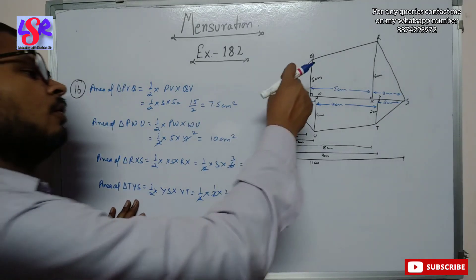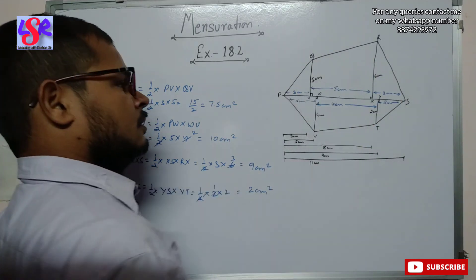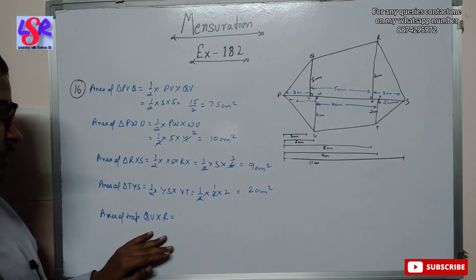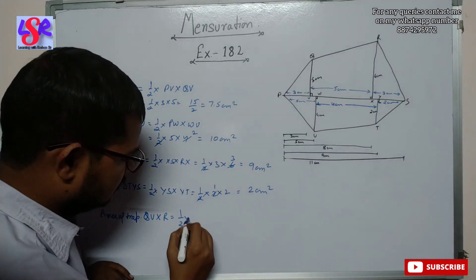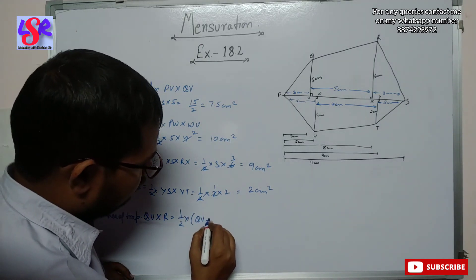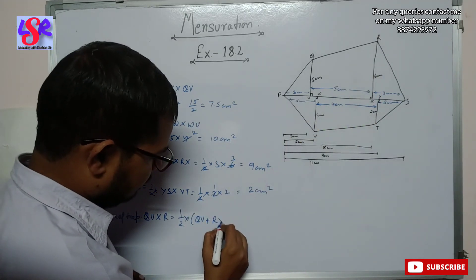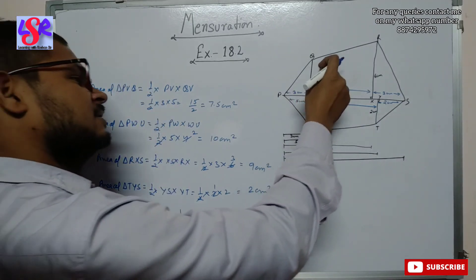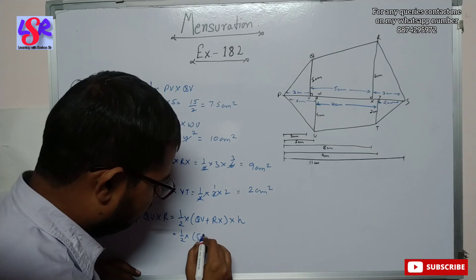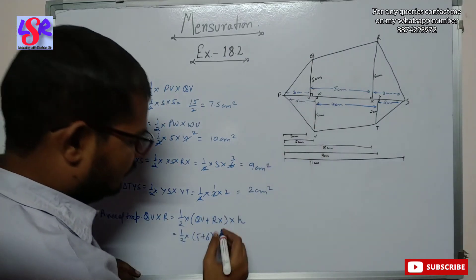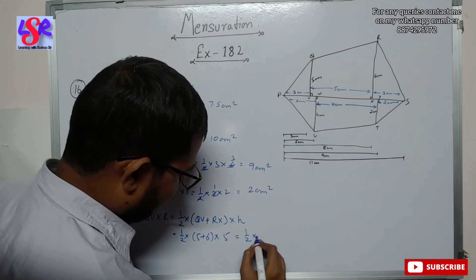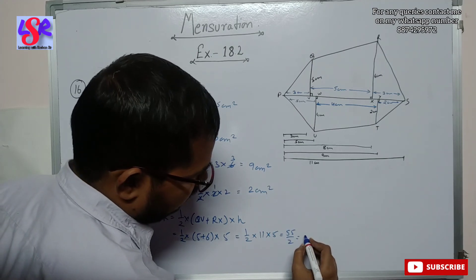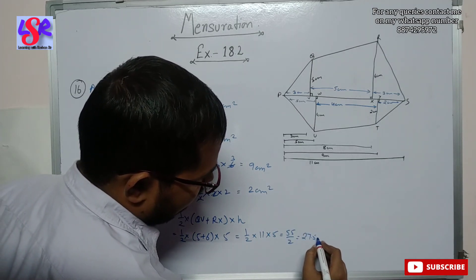Having found all triangle areas, we now calculate the trapezoids. The area of trapezium QVXR equals 1/2 into sum of parallel sides (QV plus RX) into height, which is 1/2 into (5 plus 6) into 5. This equals 1/2 into 11 into 5 equals 55/2 equals 27.5 square centimeters.